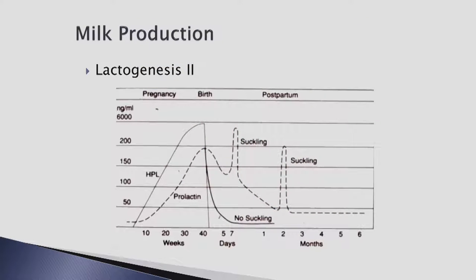While many hormones are involved in pregnancy, estrogen, progesterone, and prolactin are the three major hormones of this reproductive phase. The elevated levels of estrogen and progesterone during pregnancy prevent prolactin from stimulating milk secretion. At the time of birth, once the placenta is delivered, estrogen and progesterone levels fall dramatically while prolactin levels remain elevated. This signals the breast to begin milk production.